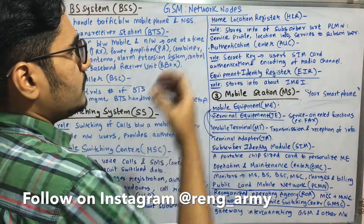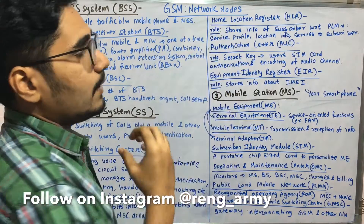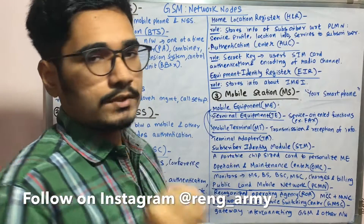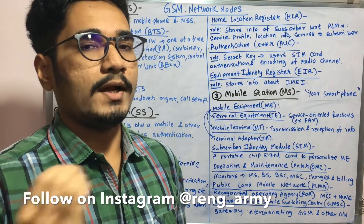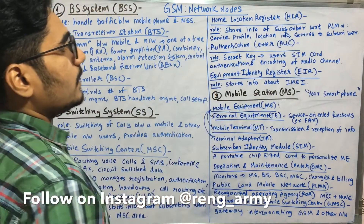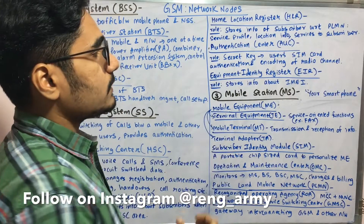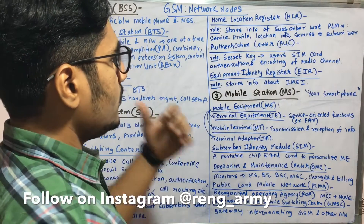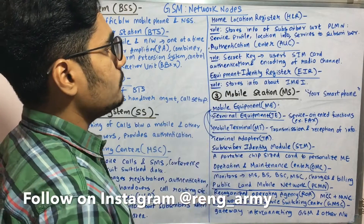Next we have the Home Location Register (HLR), which stores information about subscribers at the PLMN — the Public Land Mobile Network. The PLMN is essentially your cellular carrier, such as Idea, BSNL, Vodafone, Airtel, etc. The major functionality of the HLR includes service profile, location information, services, and subscriber identification.